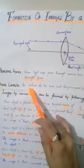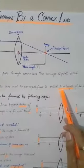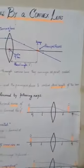As it is written here, the distance between the lens and the principal focus is called the focal length of the lens.